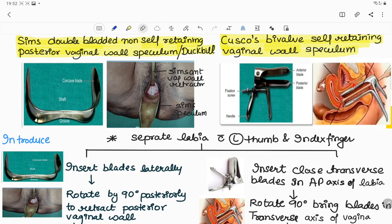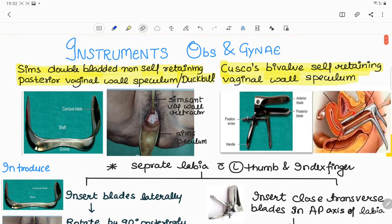So how do we introduce this SIMS speculum? After separating the labia with left thumb and index finger, we have to insert the blades laterally and rotate the SIMS by 90 degrees posteriorly to retract the posterior vaginal wall. It is used along with the SIMS anterior vaginal wall retractor.